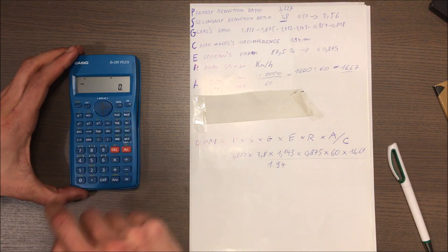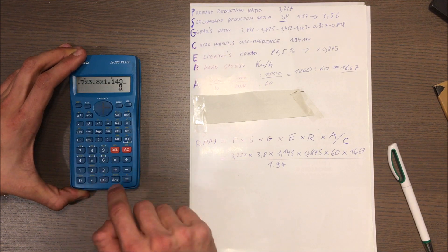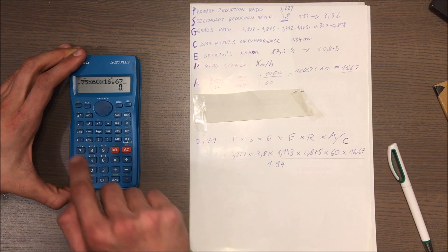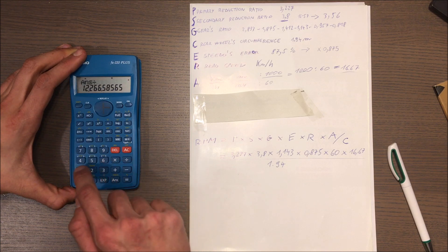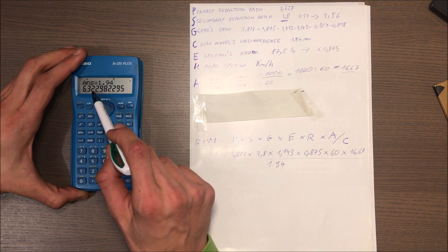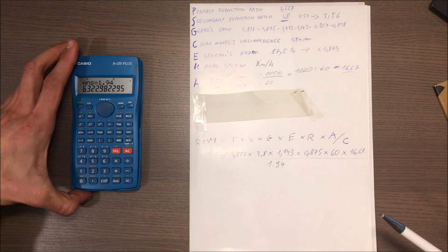We are, let's say, at 60 kilometers per hour that we read on the speedo, so 60. Let's try to do it. Okay, divide by 1.94.